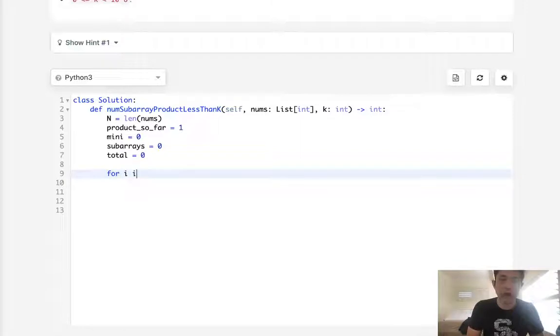So for i in range of n, let's move through and figure out what we need to do. So the first thing I suppose we'll need to do is we'll have to add to our subarrays, add to subarrays.